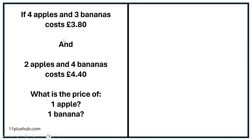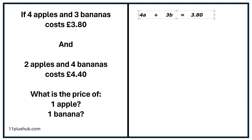All right, let's do another one. Now if you're feeling brave enough, why don't you pause the video and have a go at this one. But if you feel like you are still a bit confused, which is absolutely normal, let's give this one a go together. First step — let's read it. If four apples and three bananas cost £3.80, and two apples and four bananas cost £4.40, what is the price of one apple and what is the price of one banana? So the first step is to rewrite it: 4a + 3b = 380, and 2a + 4b = 440.